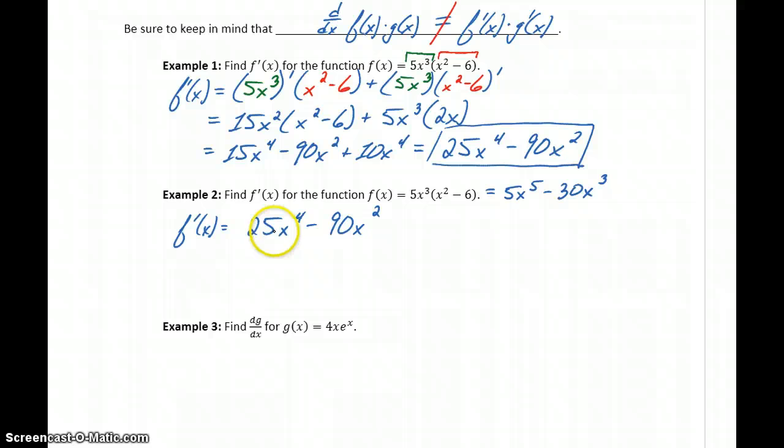So obviously this approach in example two was a lot faster. We distributed and then the derivative is one step. In example one, it took us several steps to get to that final answer. So one question becomes, why do we need this expanded approach?